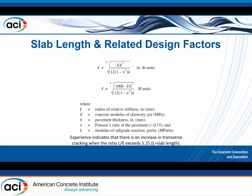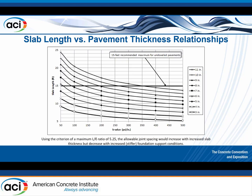Looking at cracking in correlation to slab length and the radius of relative stiffness, we're dialing in on a ratio of about 5.25, where L is the slab length over the radius of relative stiffness. Basically, as pavement thickness increases, the horizontal joint spacing can also increase — with a maximum of 15 feet. I once read a geotech report quoting 20-foot joint spacing attributed to ACI, which is incorrect; we never want to exceed 15 feet.